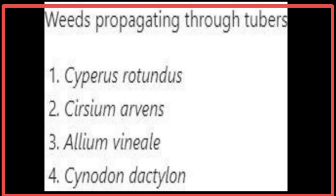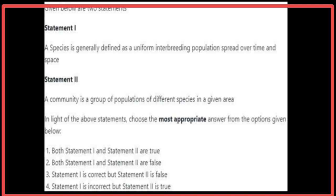The weed propagating through tubers is Cyperus rotundus. Given below are two statements. Statement 1: A species is generally defined as a uniform interbreeding population spread over time and space — Statement 1 is correct. Statement 2: A community is a group of populations of different species in a given area — Statement 2 is true. Both statements are true.